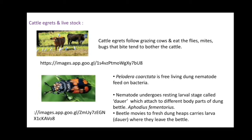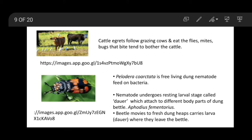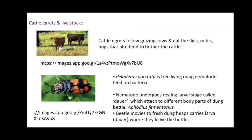The free-living dung nematode Rhabditis coarctata feeds on bacteria. The nematode undergoes a resting larval stage called a dauer, which attaches to different body parts of the dung beetle Aphodius fimetarius. The beetles move to fresh dung heaps and carry the dauer larva with them when they leave.